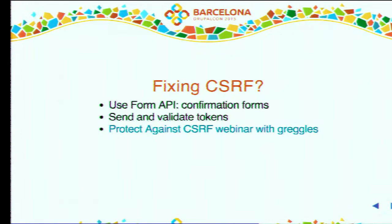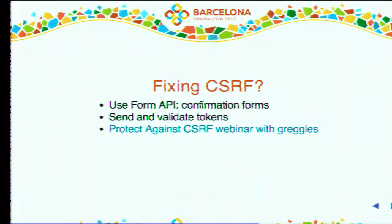How do we fix cross-site request forgery? The easiest way is to use the Form API — there's a good API for confirmation forms, so when you click a link it asks 'do you really want to delete this node?' and the submit button is protected by the Form API's CSRF protection. But sometimes for usability you want a link to work immediately — then you would validate tokens passed in the URL using drupal_get_token and drupal_validate_token. There's a good webinar by Greg Nettison on how CSRF works and what you can do about it that I recommend.